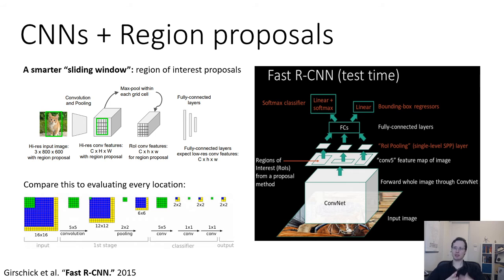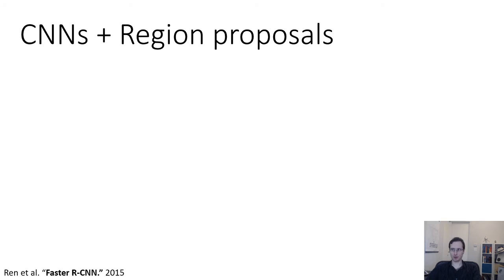So in many ways, it's a similar idea to the one we saw in Overfeat, only now, instead of the crops corresponding to these sliding windows, they actually correspond to these region of interest proposals. And the region of interest proposals can themselves actually be trained as part of the same conv net.